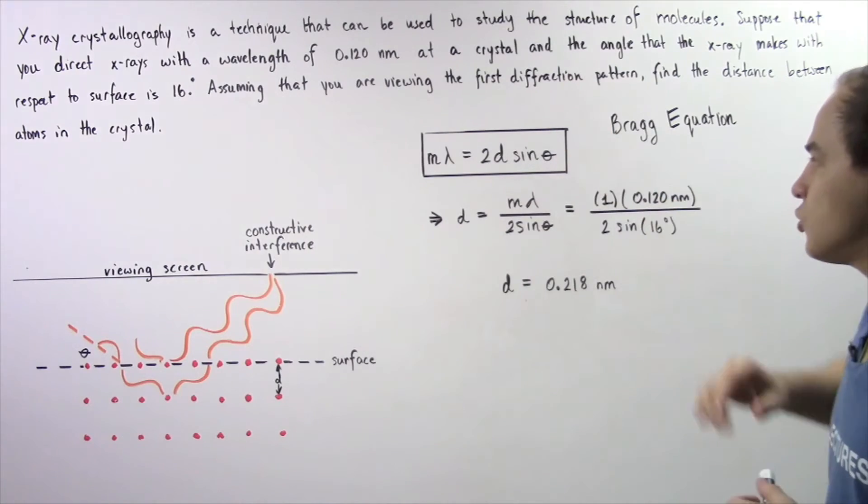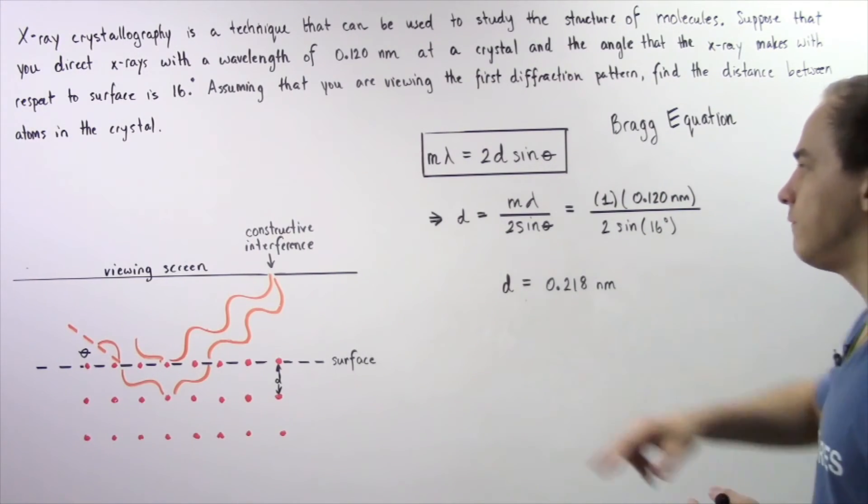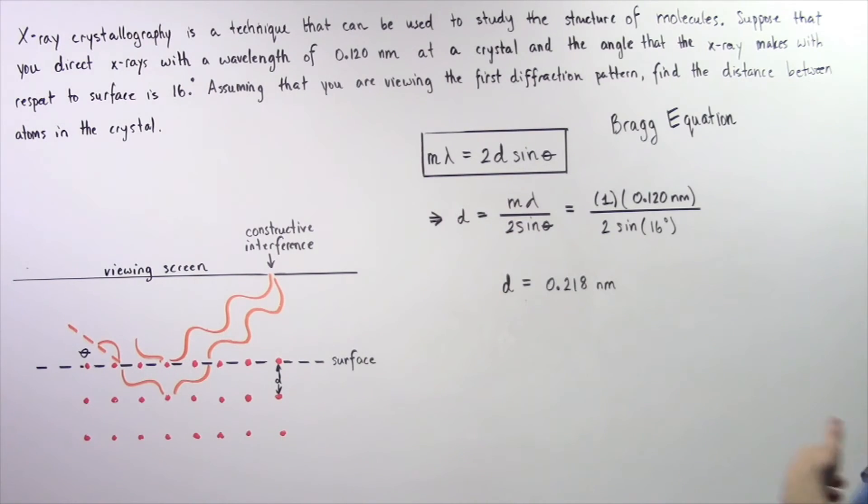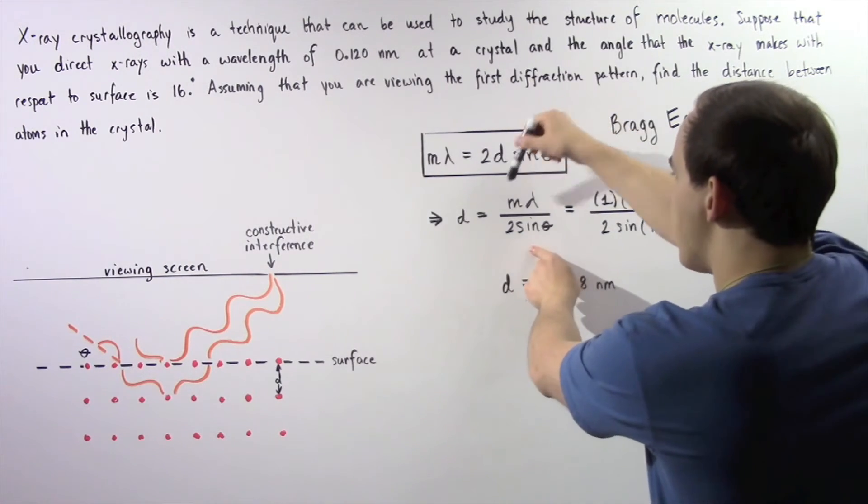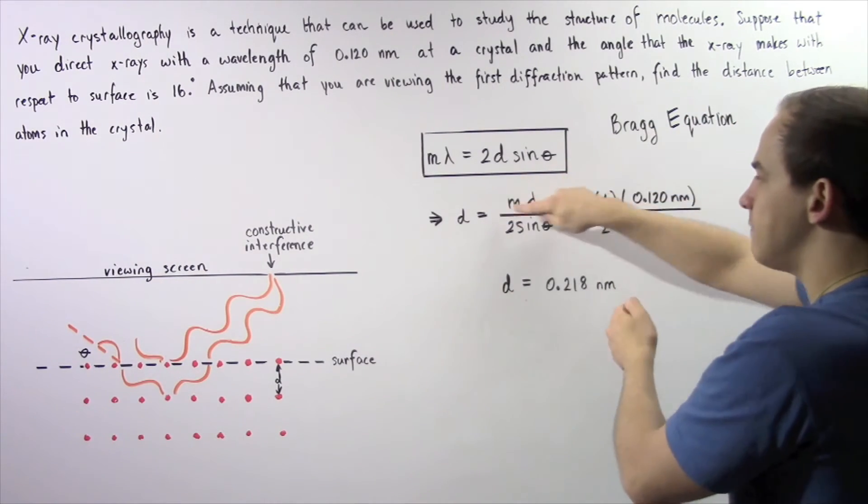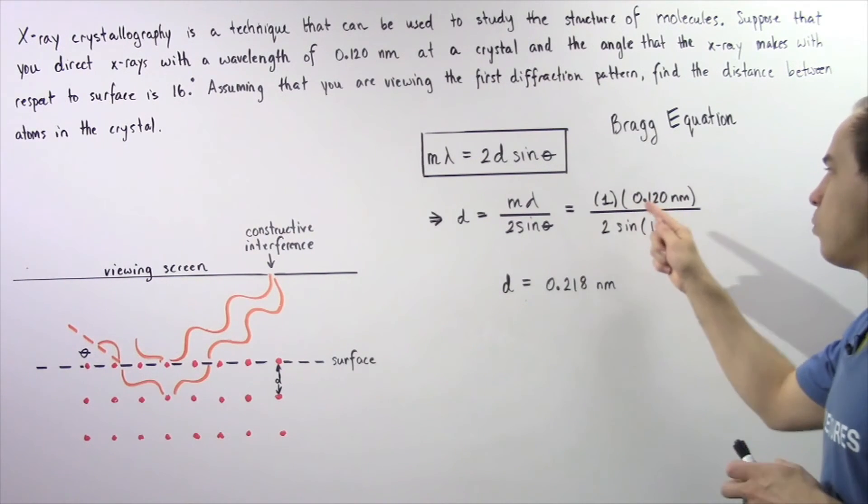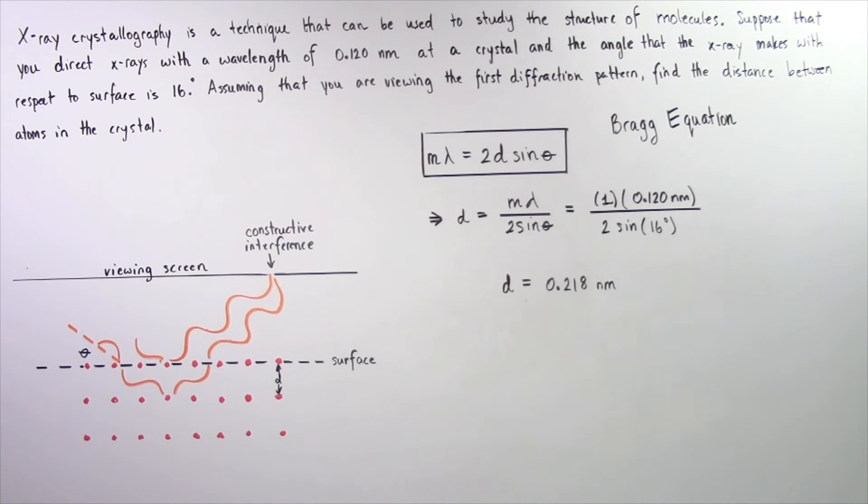Let's take this equation, rearrange it, and solve for d, our distance between the two atoms. So d equals m multiplied by lambda divided by 2 times sine of theta. Theta equals 16 degrees, m equals 1, and our wavelength equals 0.120 nanometers.